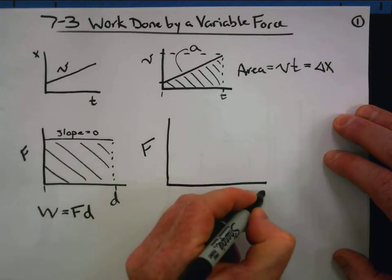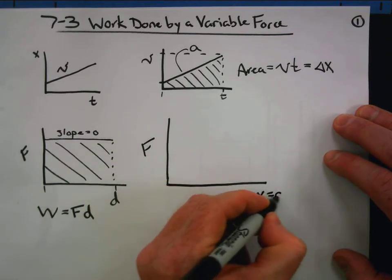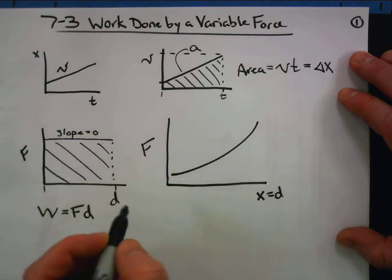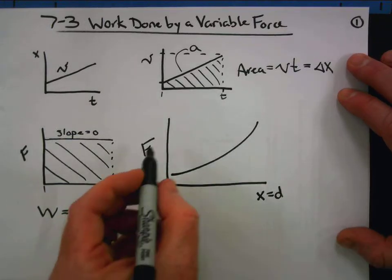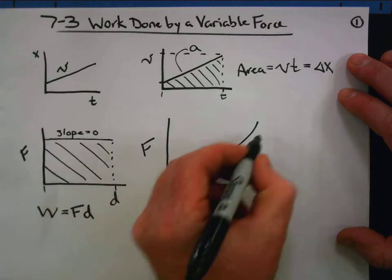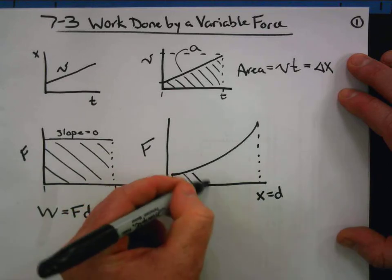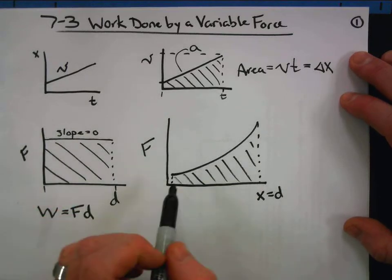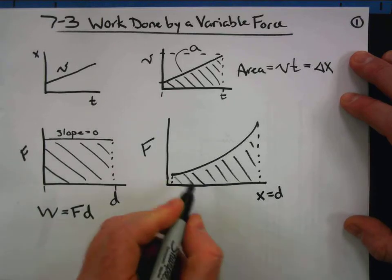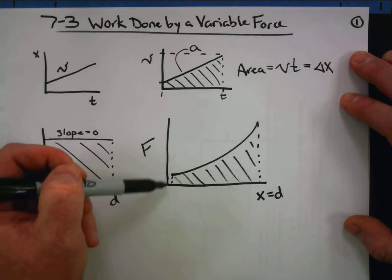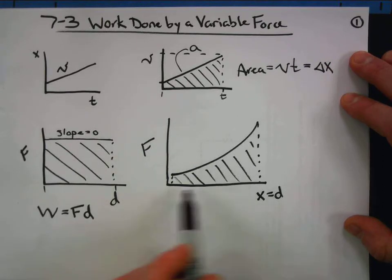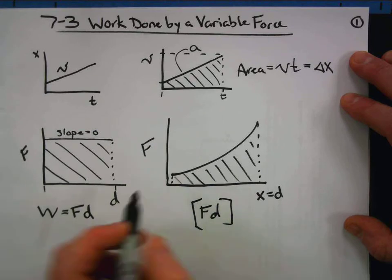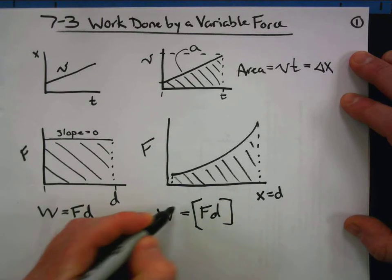But if the force is a variable force, things change. On the force-distance graph, as the object moves the force is changing — and this one can be quite extreme. If we wanted the work done by this force, we would have to look at the area under this curve, and without calculus we don't have much chance of doing that exactly — it could be approximated, but that would be about the best we could do. We're still multiplying the force dimension by the distance dimension to find that area, but it's obviously more complicated than just force times distance.